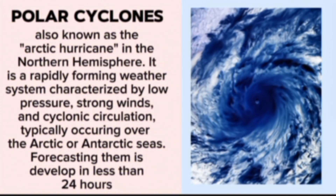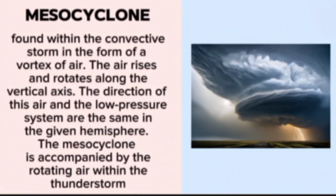Forecasting them is challenging as they develop in less than 24 hours. Meso-cyclone, within the convective storm, is in the form of a vortex of air. The air rises and rotates along the vertical axis. The direction of this air and the low pressure system are the same in the given hemisphere. The meso-cyclone is accompanied by rotating air within the thunderstorm.